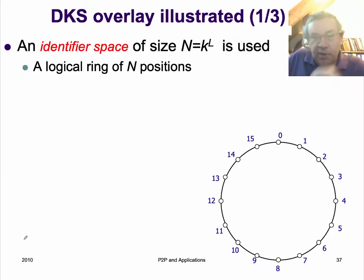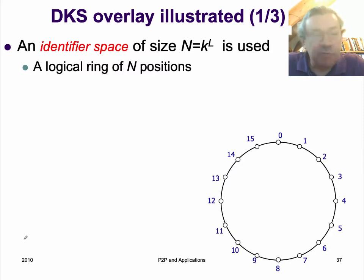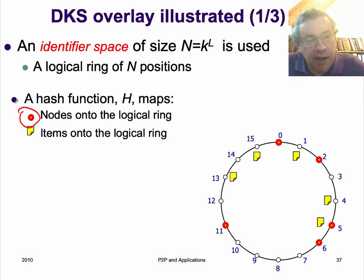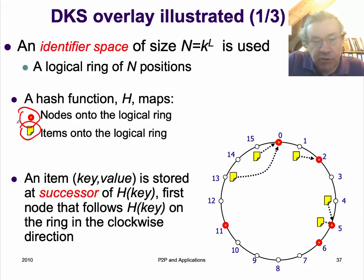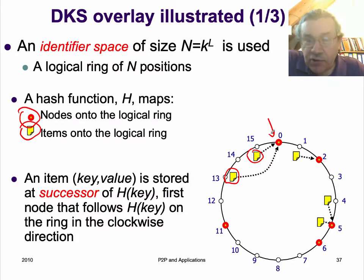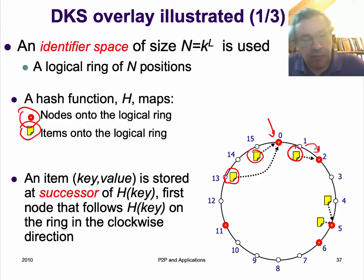It'll look very familiar because we already mentioned distributed care research. We have an identifier space of size k to the l with a hash function, so nodes are mapped onto the ring. The red circles are the nodes, and the documents are the items, stored at their successor nodes. For example, items 13 and 15 are both stored on node 0, which is the first successor node that actually exists. Item 1 is stored on node 2, and so on.